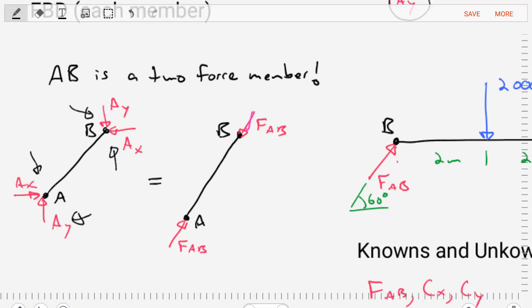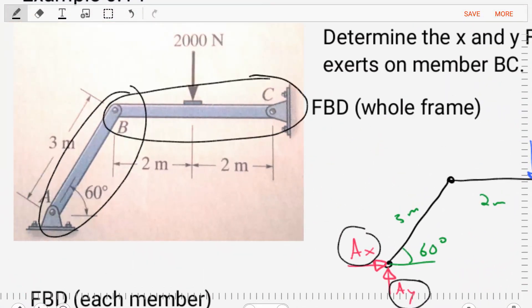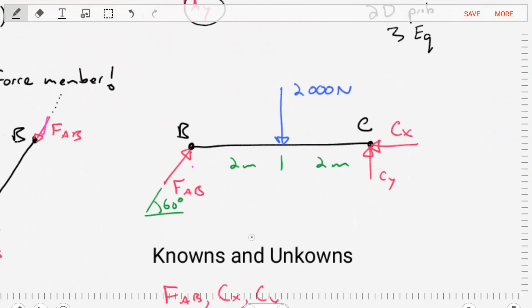their resultant should have the same line of action as the line of action of the member. And the forces on each end of the member should be equal and opposite. So by isolating AB, we've recognized it as a two-force member. And now when we isolate member BC, we can transmit only that single concentrated force that's on the line of action of member AB.